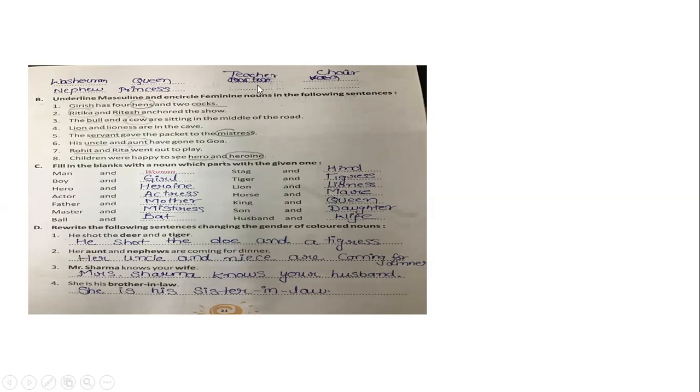Chair is neuter. Here our second question is underline the masculine and circle feminine nouns in the following sentences. You have to circle feminine and underline masculine.